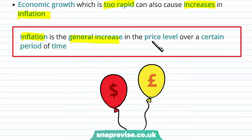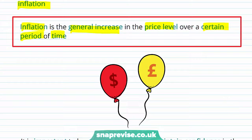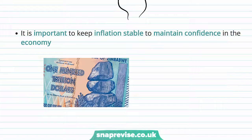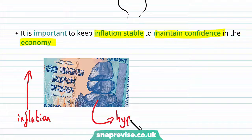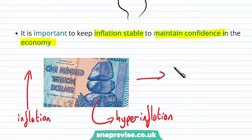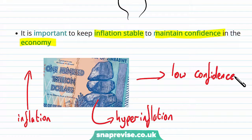Inflation is the general increase in the price level over a certain period of time. It is important to keep inflation stable to maintain confidence in the economy. If there is really high inflation, people might start to lose confidence in the value of their currency, which leads to hyperinflation. Having low confidence in the economy is undesirable because the power and value of the currency has almost diminished, and we might end up in a bartering economy.